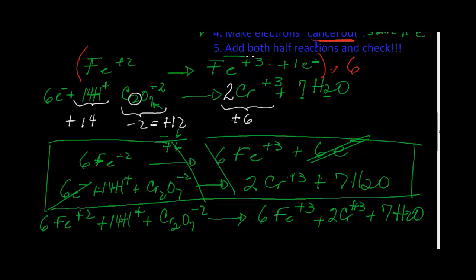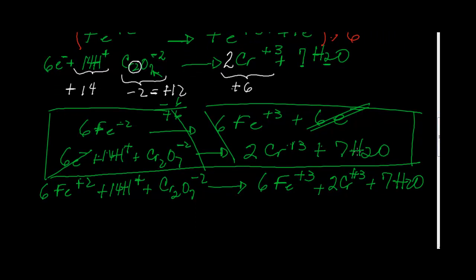I added both half-reactions. Now I need to check that every element is balanced — irons, chromiums, oxygens, hydrogens, and charges. We have six irons on the reactant side and six irons on the product side — balanced. Two chromiums on the reactant side and two chromiums on the product side — balanced. Fourteen hydrogens to begin with, and seven times two equals fourteen hydrogens at the end. Seven oxygens in the product from the waters, and seven oxygens in the dichromate — all elements are balanced.